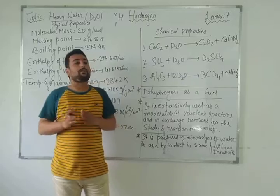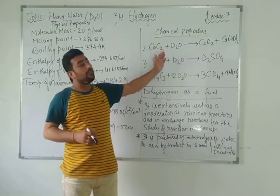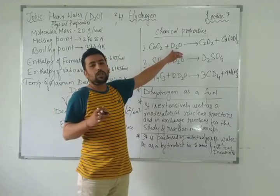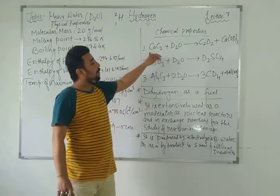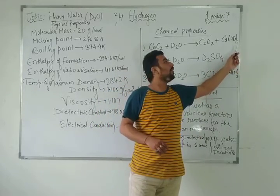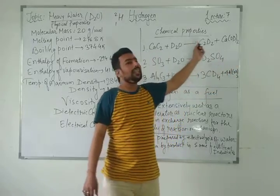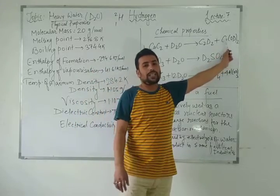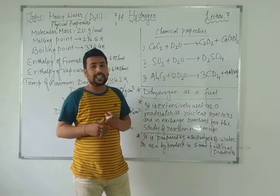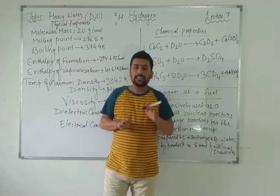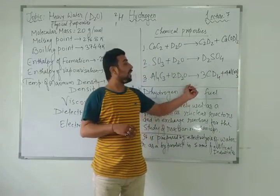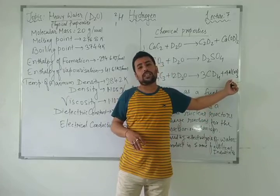Now, what are the chemical properties of heavy water? Chemical properties means reactions. When calcium carbide reacts with deuterium oxide (D₂O), it produces calcium hydroxide and deuterated acetylene (C₂D₂). Similarly, aluminium reacts with D₂O to give aluminium hydroxide and deuterium gas.